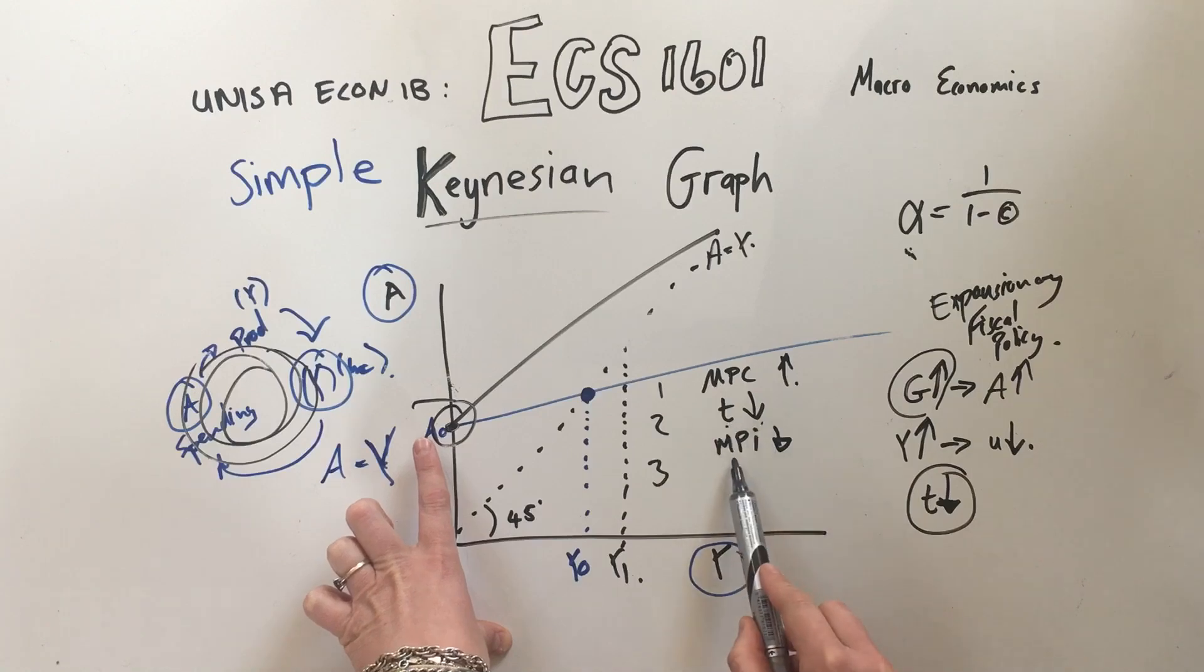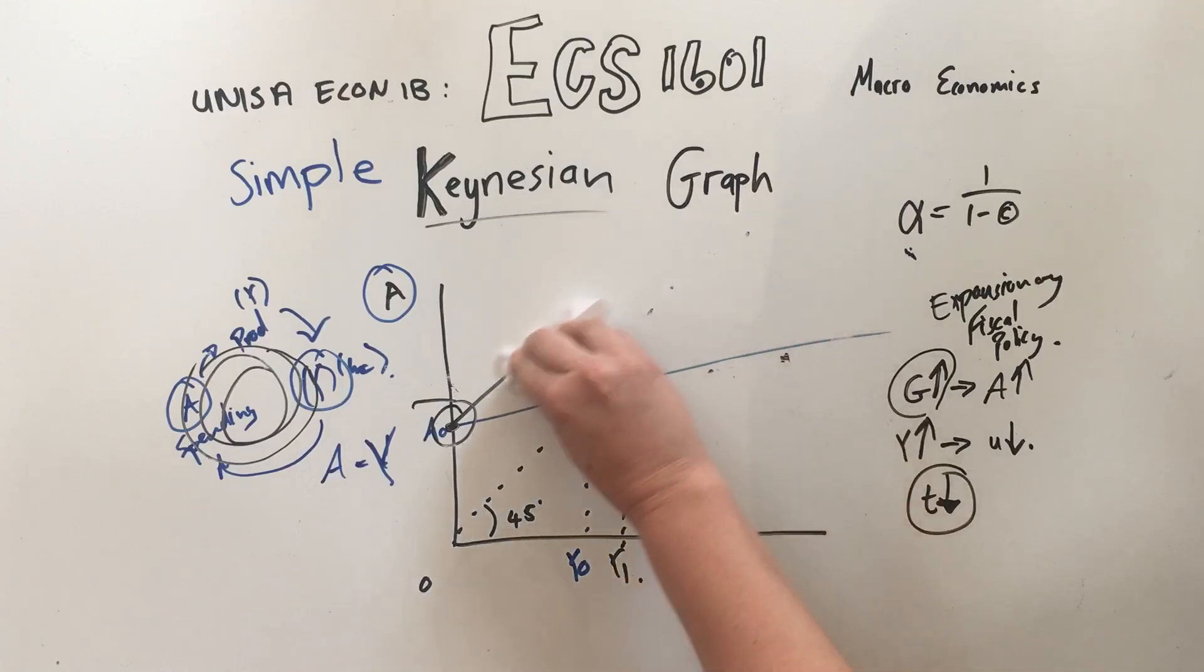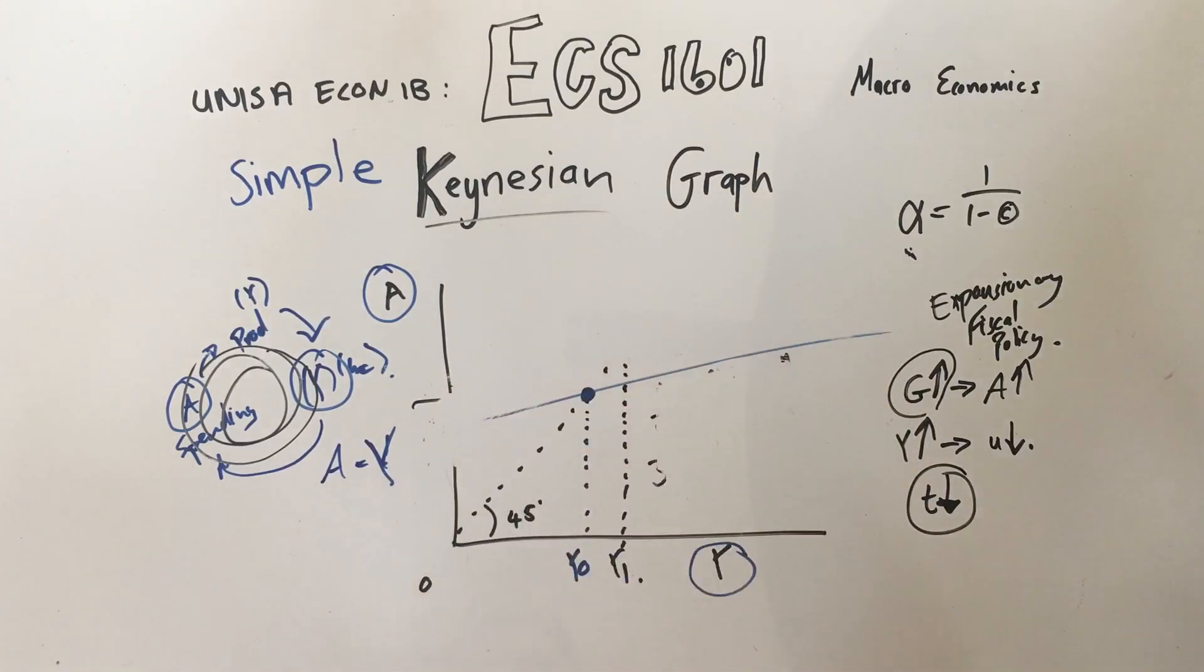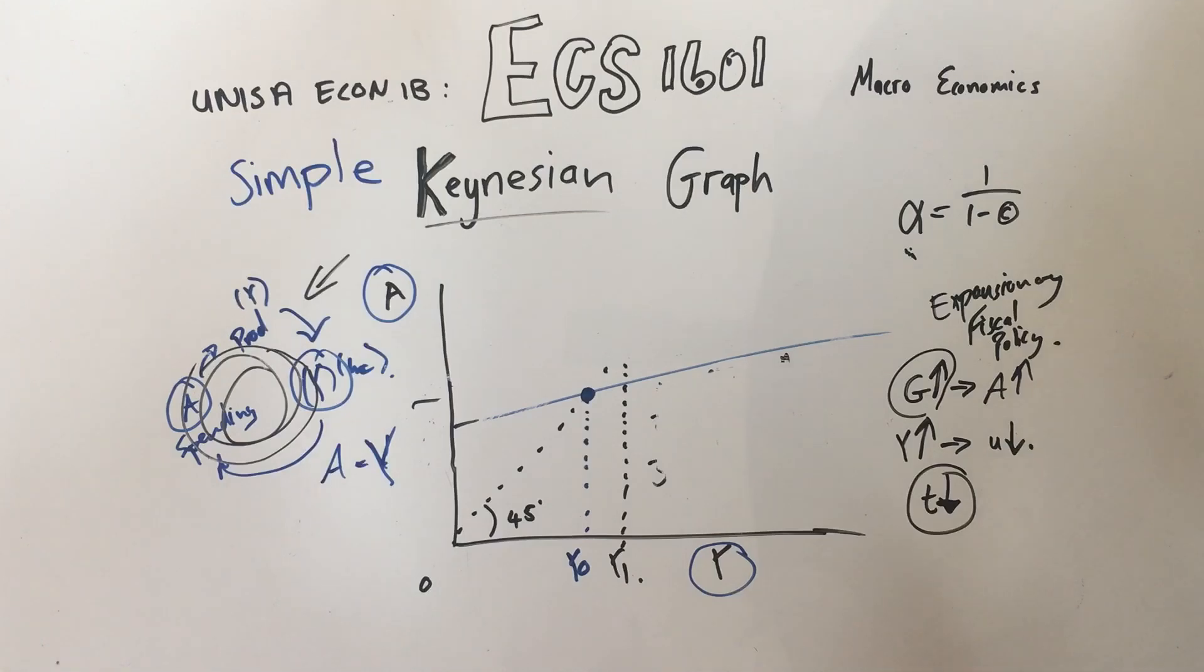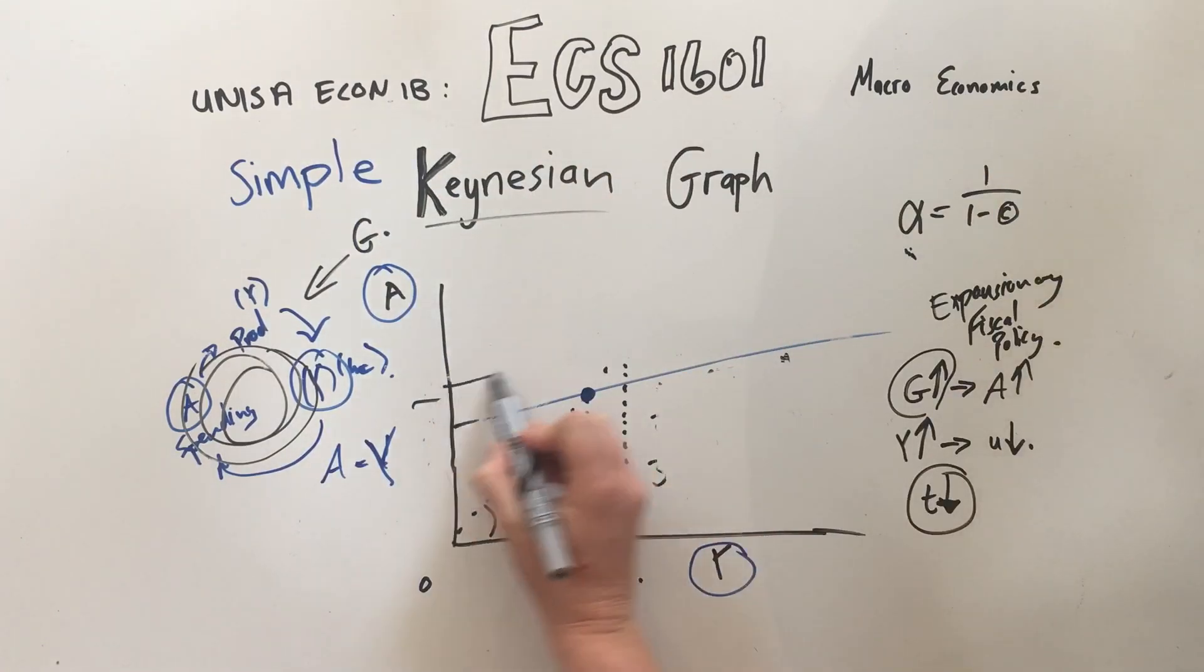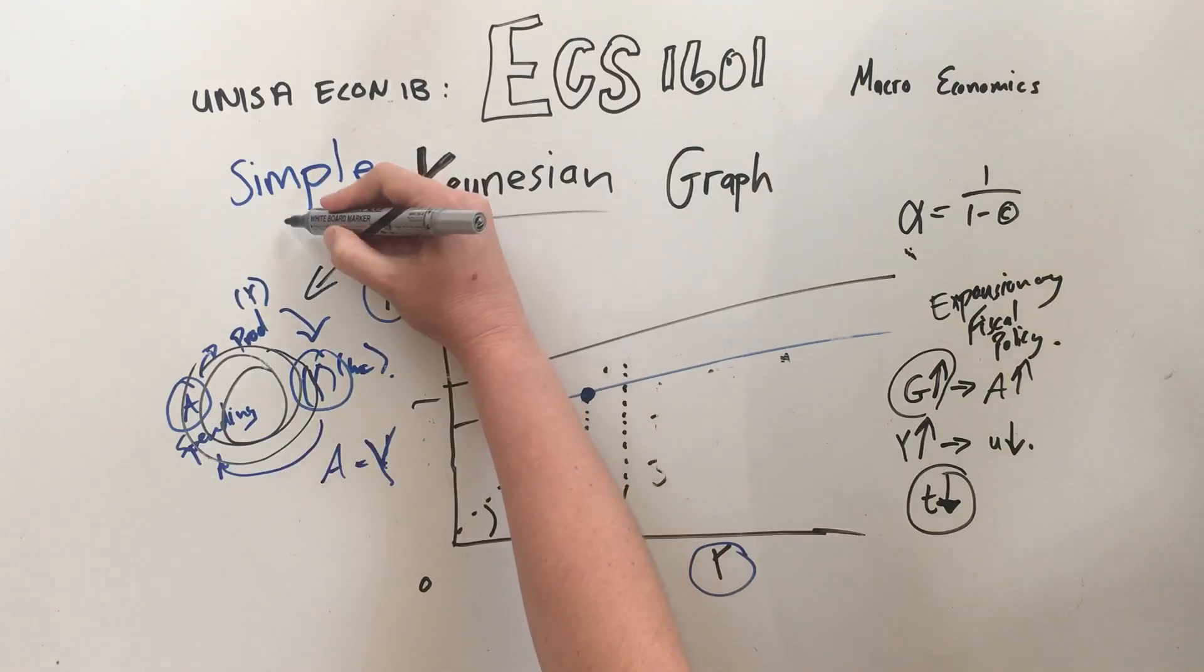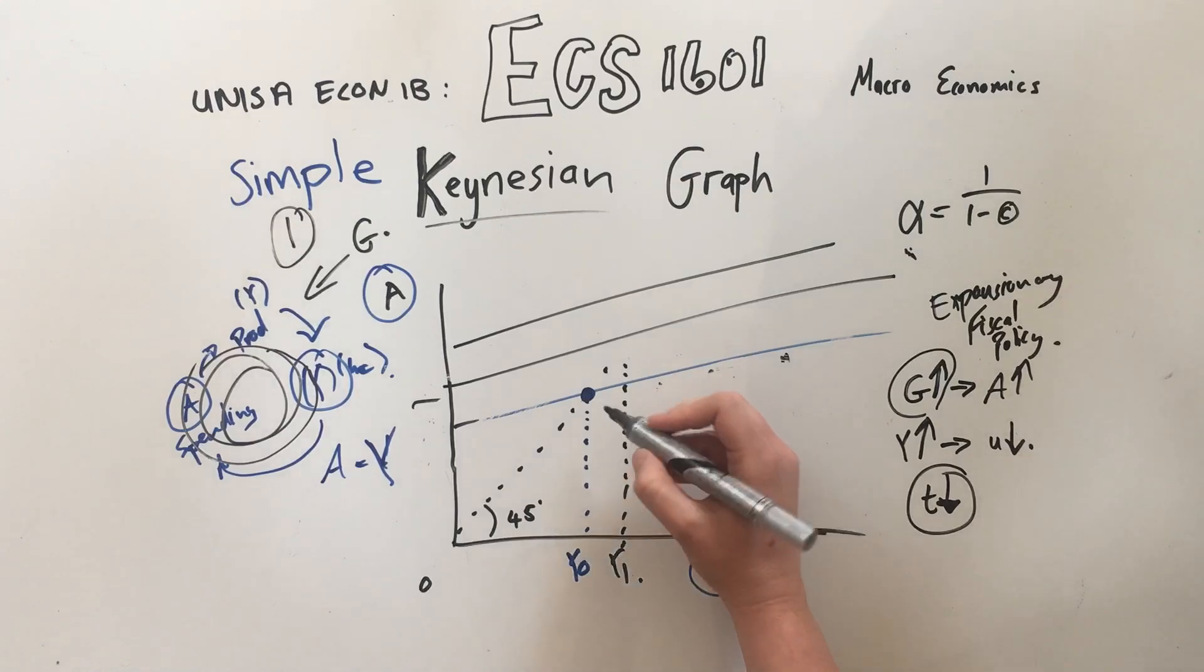The way to push the line up with fiscal policy is to increase government spending. Government spending, as you remember from the flow video, and the flow video is really important, so I know you think you know the flow but just watch it, it's good. Government spending is an injection, so that lifts it. We also said that investment is an injection, so that would also lift this curve.